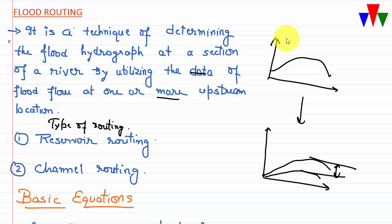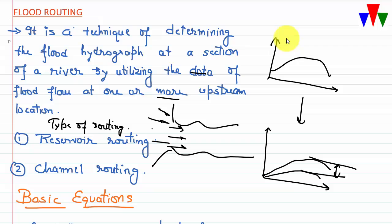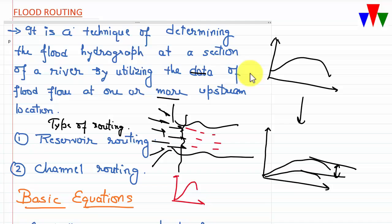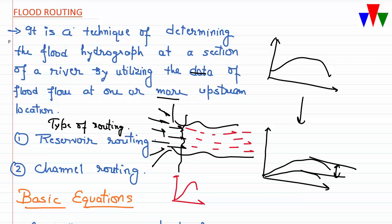In a river with a catchment area, the input hydrograph at an upstream location will have a much higher peak discharge. As this water travels downstream, storage increases and the output discharge has a peak of lesser magnitude. So at point A the input hydrograph has a high peak, but at point B the output hydrograph has a reduced peak — basically the peak has been attenuated.